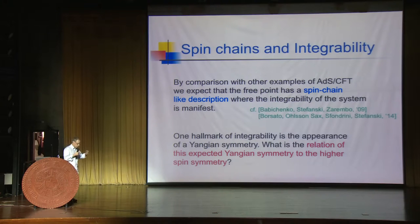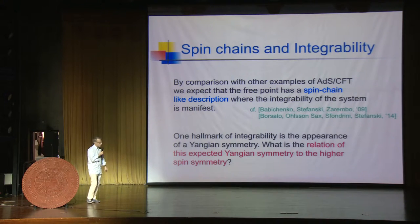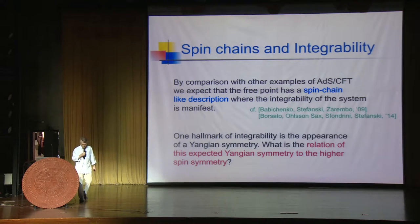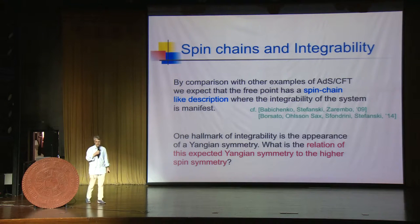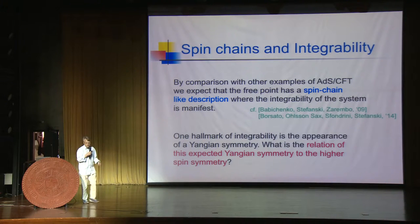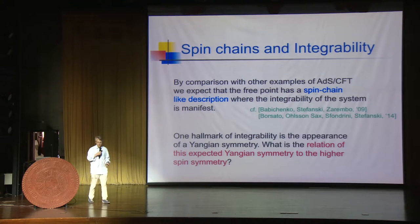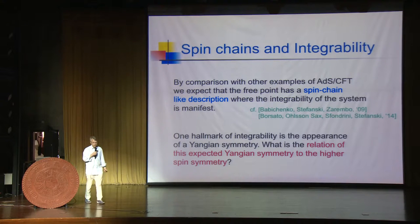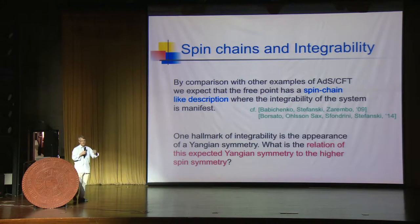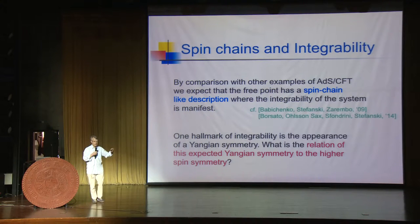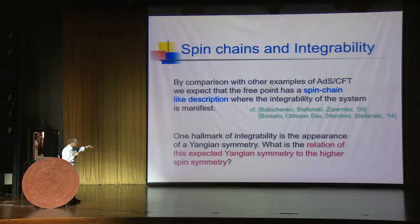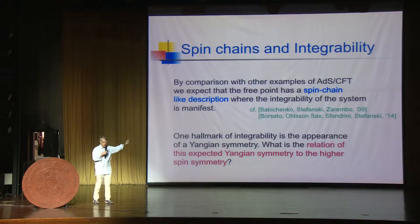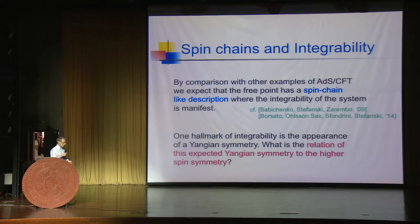What we are trying to understand is that this is really like the analog of the free point of Super-Yang-Mills in four dimensions — this is the lower dimensional analog. In that case, it has proven very useful to think about the theory in terms of a spin chain where the integrability of the system becomes manifest. What we would like to understand is what's the analog of this spin chain-like integrable description in the context of AdS3/CFT2, and in particular what's the relation between the Yangian symmetry, a hallmark of integrability, and the higher spin symmetry manifestly present in the dual CFT.